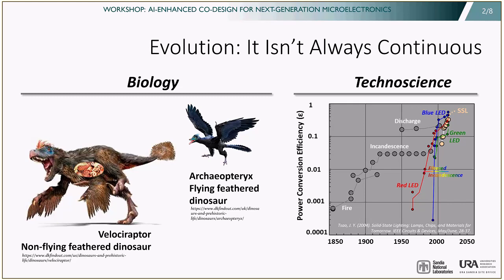Let's start with evolution. The point I want to make is that evolution usually proceeds continuously, but every once in a while it experiences discontinuities. Here on the left is an example from biology: dinosaur evolution. The dinosaur on the left is a velociraptor. Like virtually all living things, the velociraptor is highly modularized — it has all sorts of organs just like we have: a heart, lungs, stomach, liver, etc. These organs interact in particular ways.